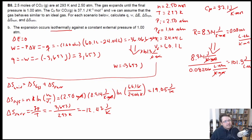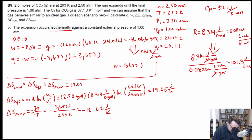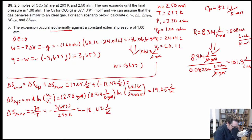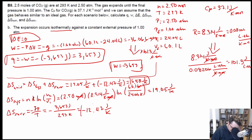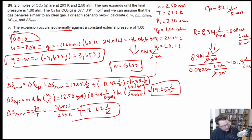Delta S of the system and surroundings are not equal to each other because it's an irreversible process, confirming a non-zero delta S of the universe. Delta S of the universe equals 19.05 joules per Kelvin plus negative 12.47 joules per Kelvin, which equals 6.58 joules per Kelvin. This matches the answer key value of approximately 6.5 joules per Kelvin — the small difference is due to rounding.